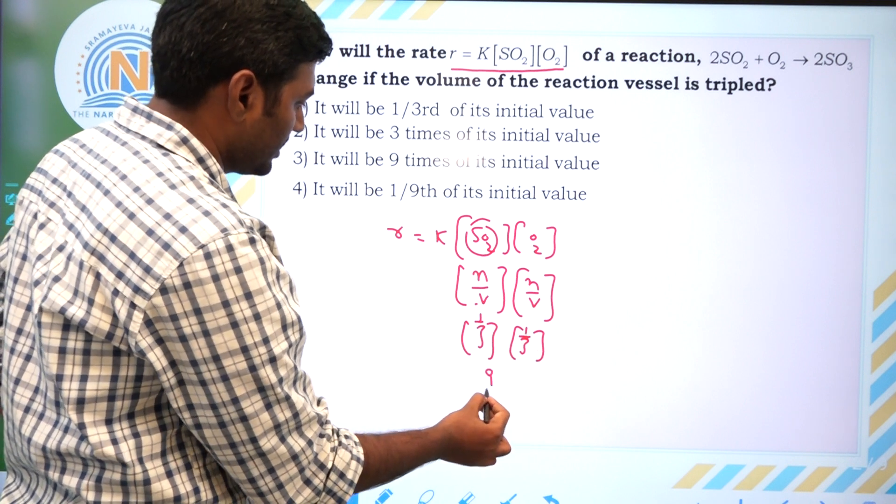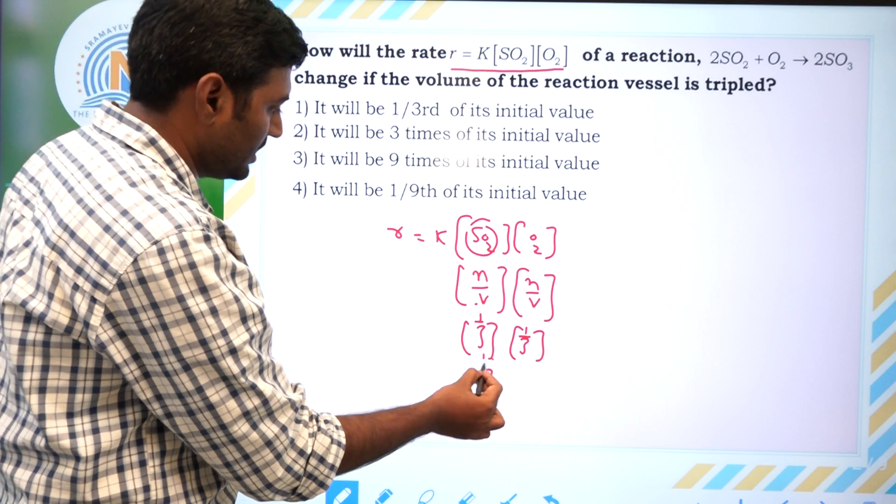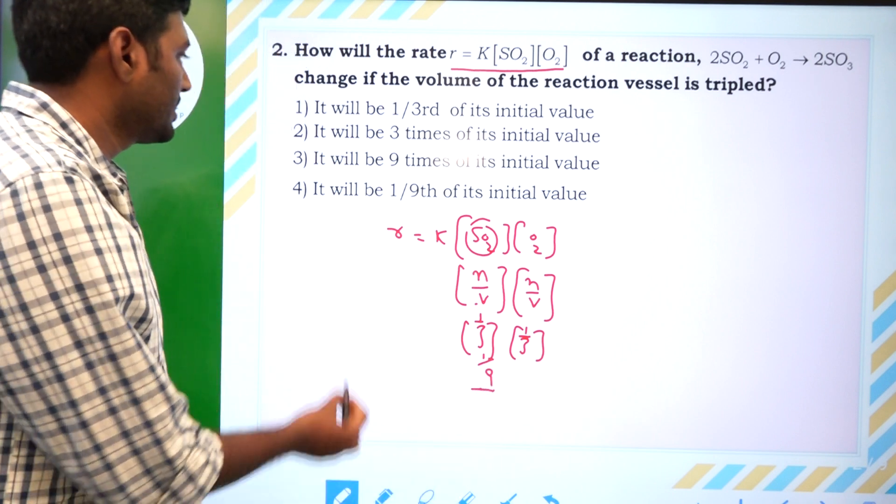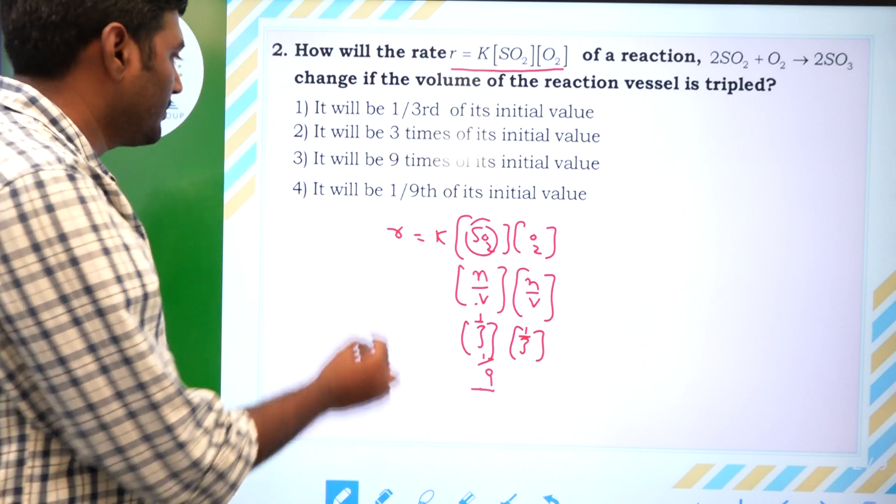It becomes 1/9 of the initial volume. Hence, it is 1/9. It will be 1/9th of its initial value. Next one.